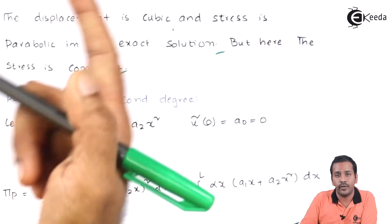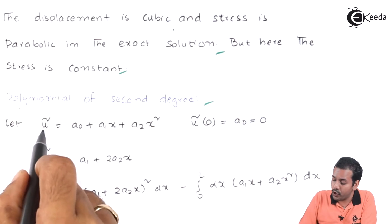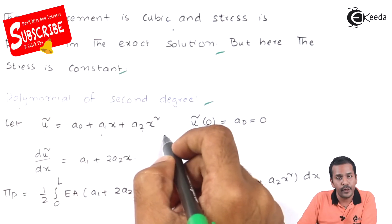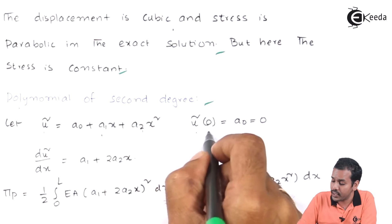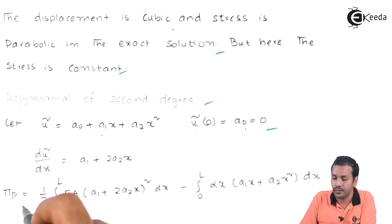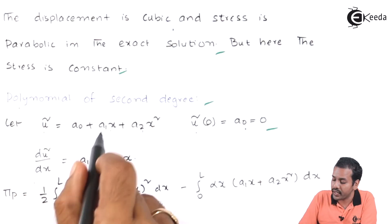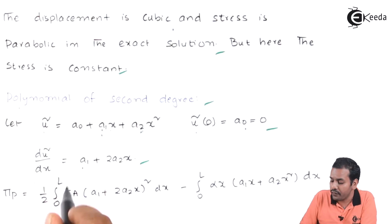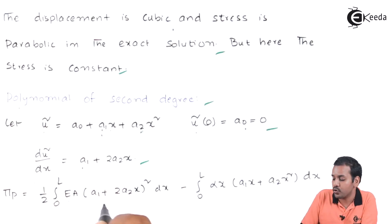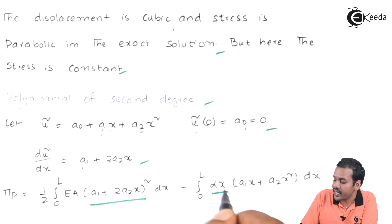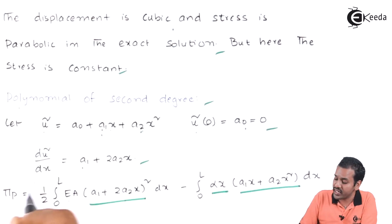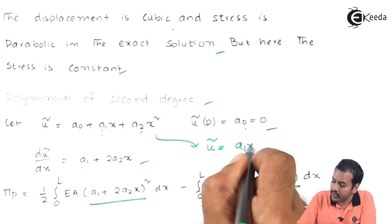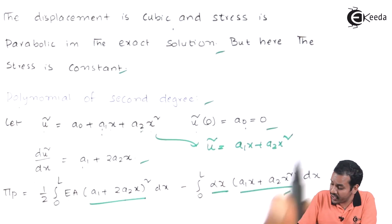Let us increase the degree by one — polynomial of second degree: u-tilde = a₀ + a₁ x + a₂ x². Applying the essential boundary condition u-tilde(0) = 0 gives a₀ = 0. So du-tilde/dx = a₁ + 2a₂ x. The potential energy is pi_p = one-half integral from 0 to L of EA times (a₁ + 2a₂ x)² dx minus the integral from 0 to L of alpha x times (a₁ x + a₂ x²) dx.